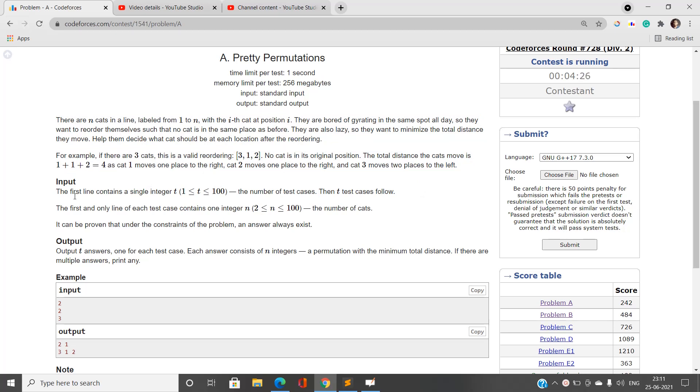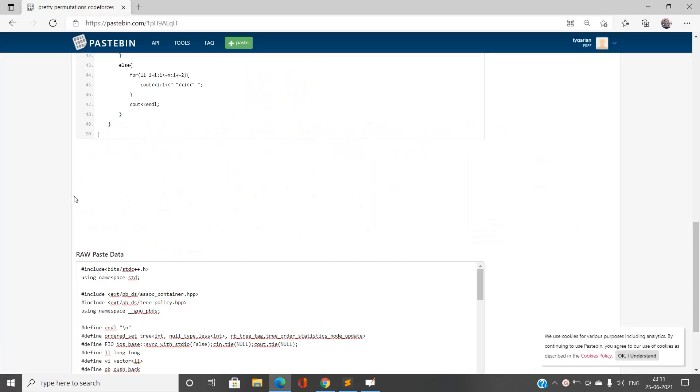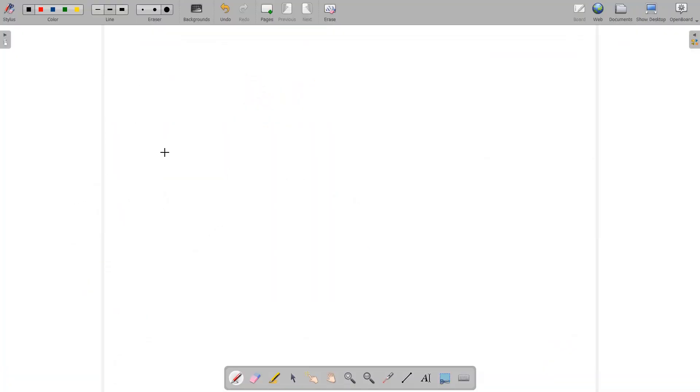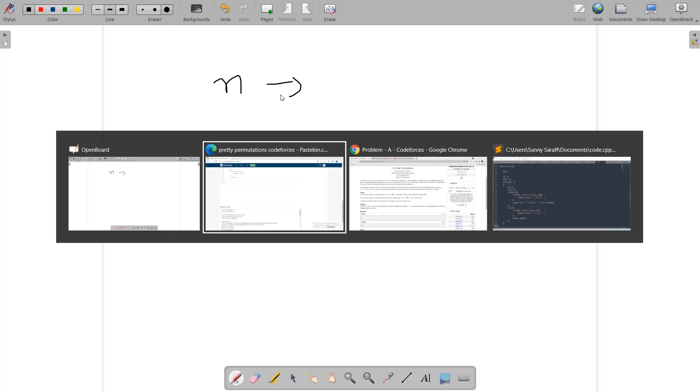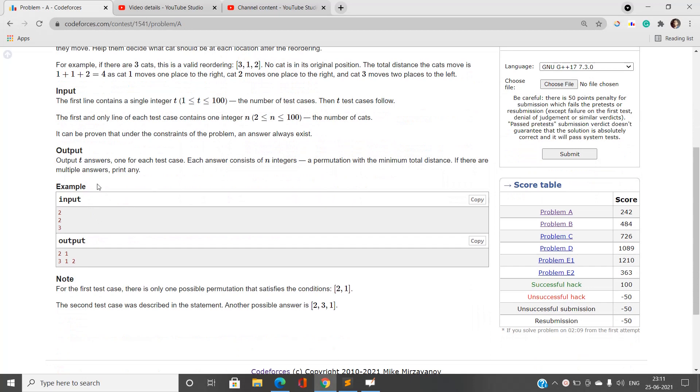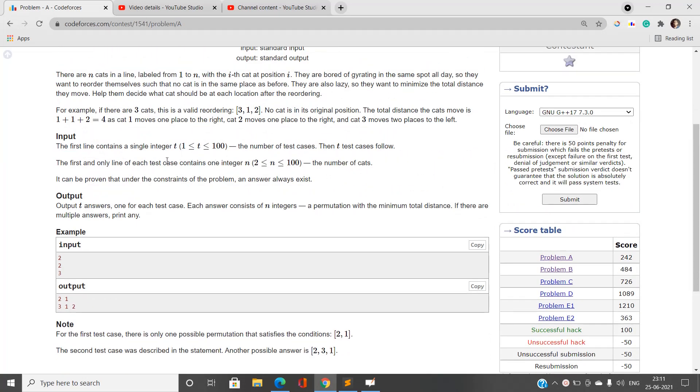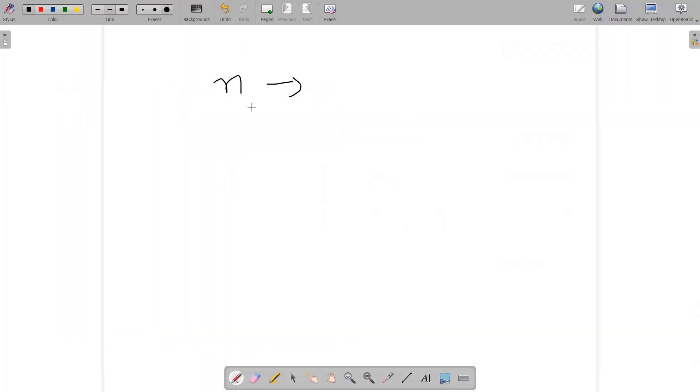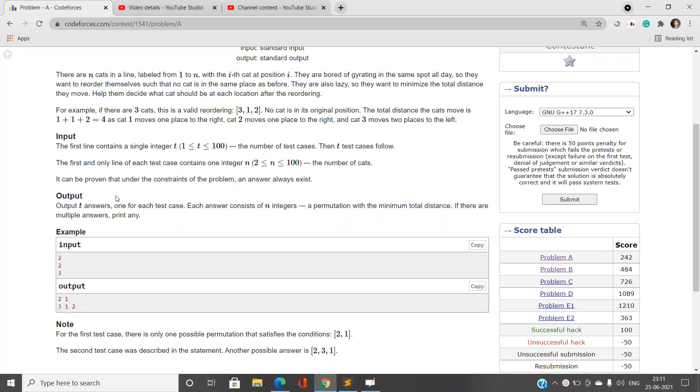So suppose we have some array elements - it will be a permutation. You'll be given some n, and if you focus on the inputs, it will be n (the number of cats) and n cats in an array labeled from 1 to n. So basically we will be given some permutation from 1 to n. What we have to do? Finally, for each test case, find a permutation with minimum total distance. If there are multiple answers, print any.